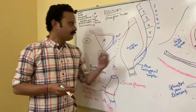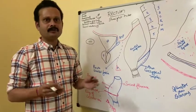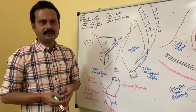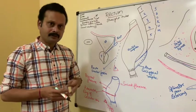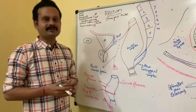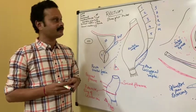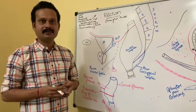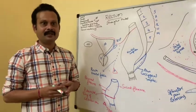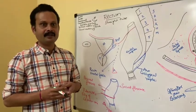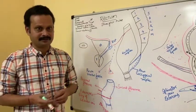Coming to the description of the rectum, it is the lowermost dilated part of the large intestine. Although it is a part of the large intestine, it does not contain the features of the large intestine — that is, the sacculations or haustrations, the taenia coli, appendices epiploicae, and even the mesentery. It is devoid of all these things.